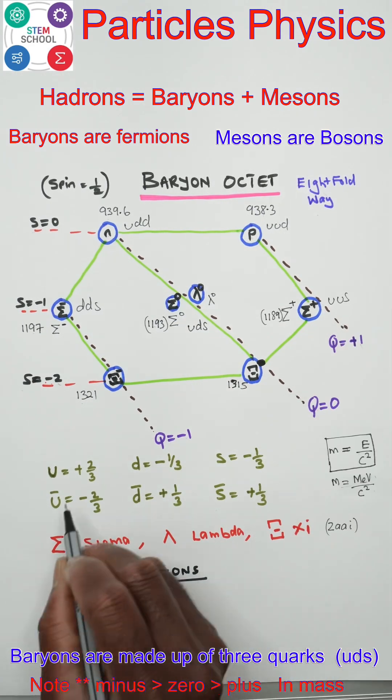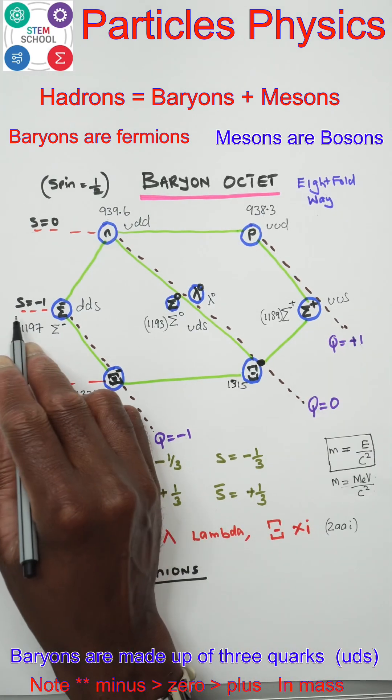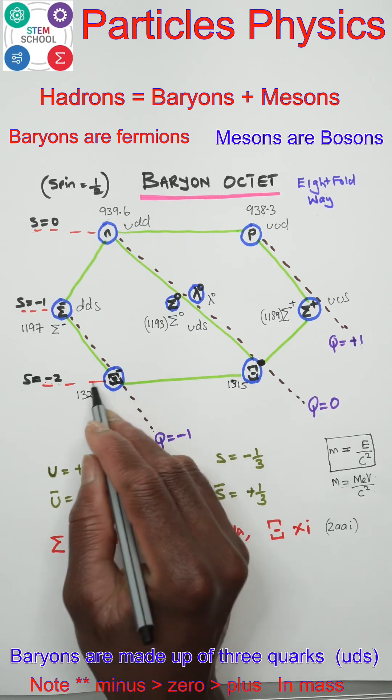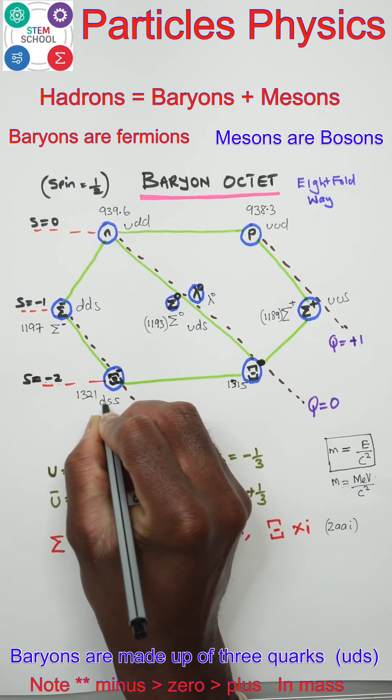UUS - using charge to work it out. Because it's got S equals minus one, it's got one S quark. This one has S equals minus two, so it's got two S's: SSD.